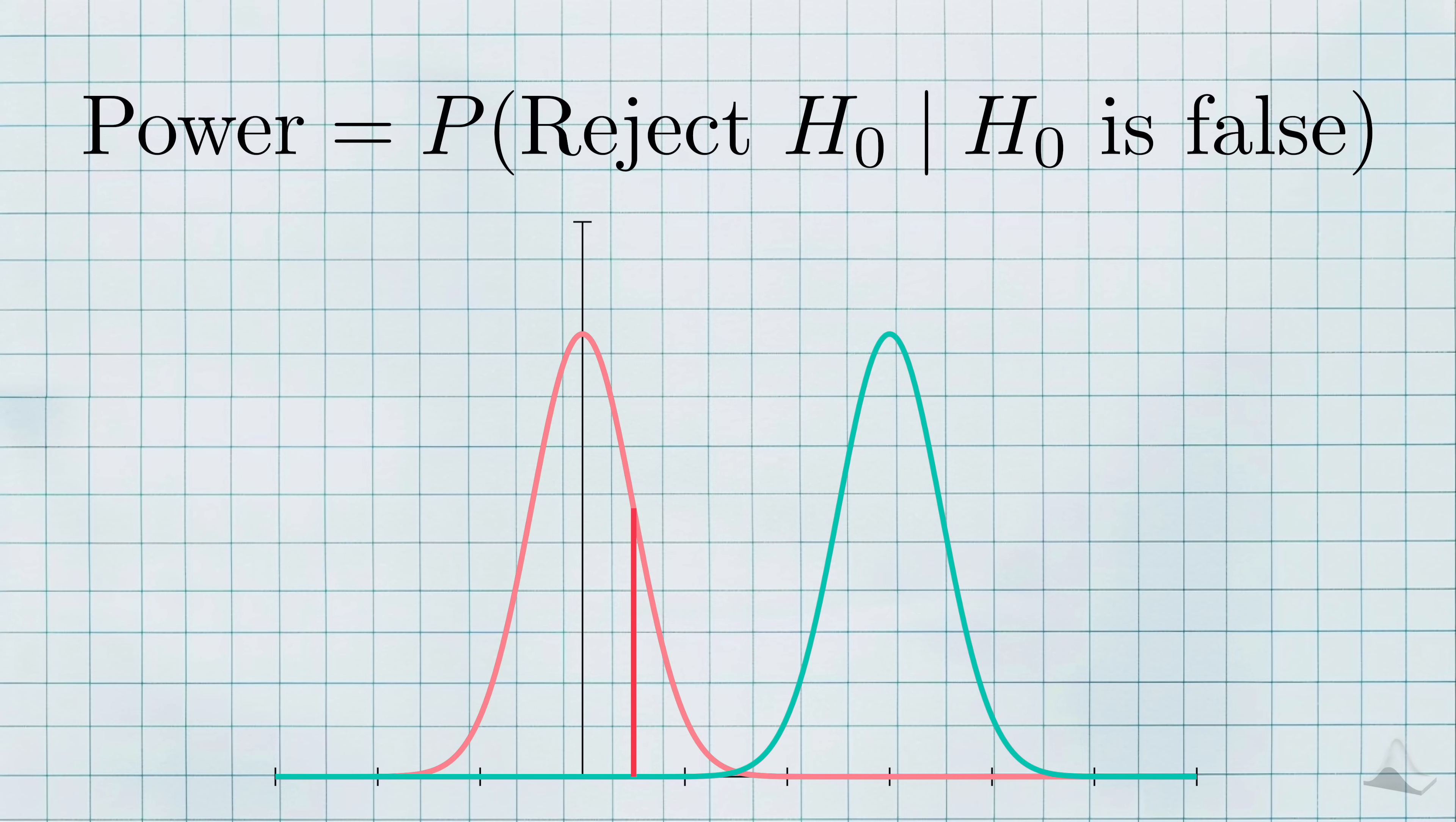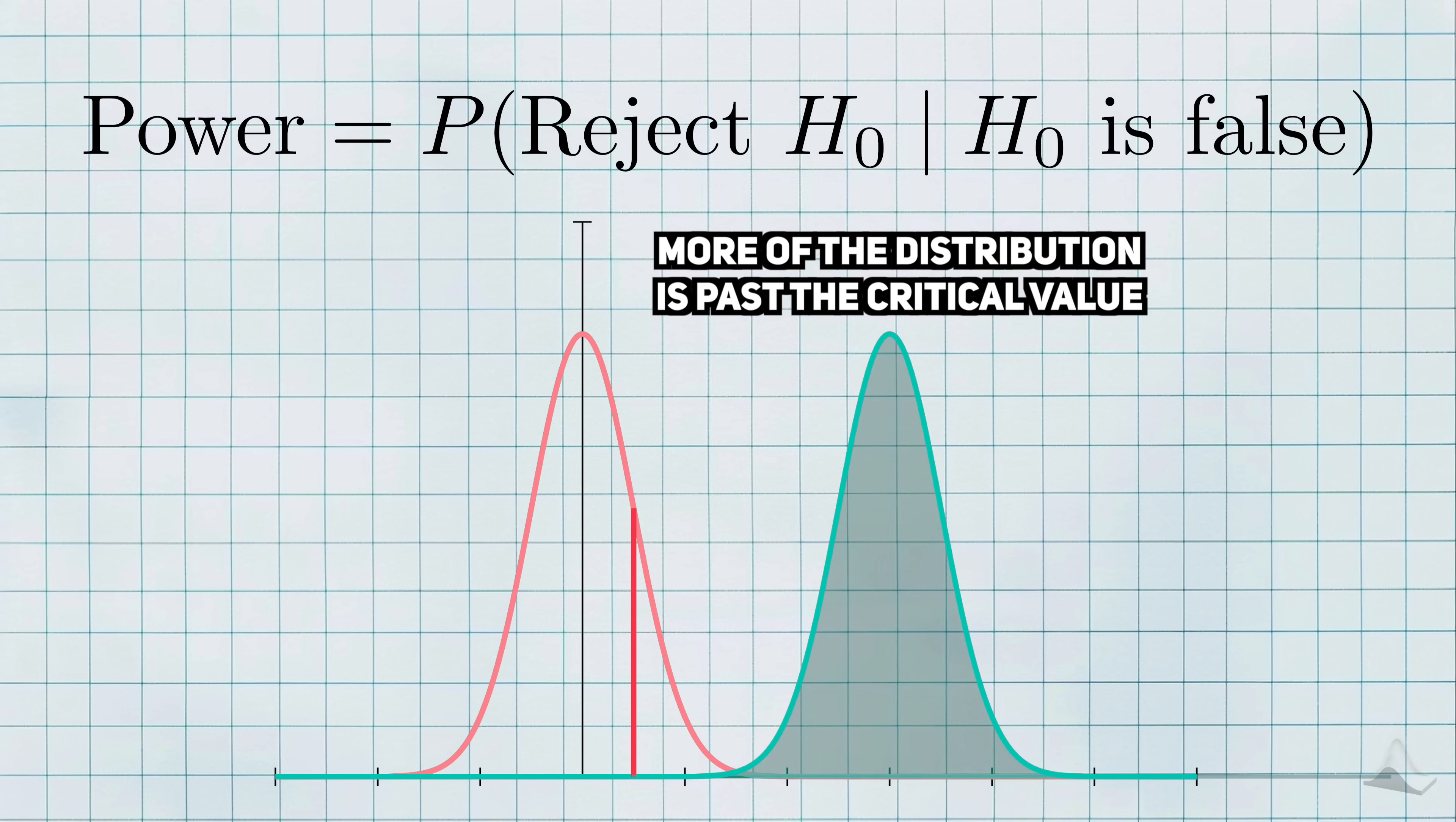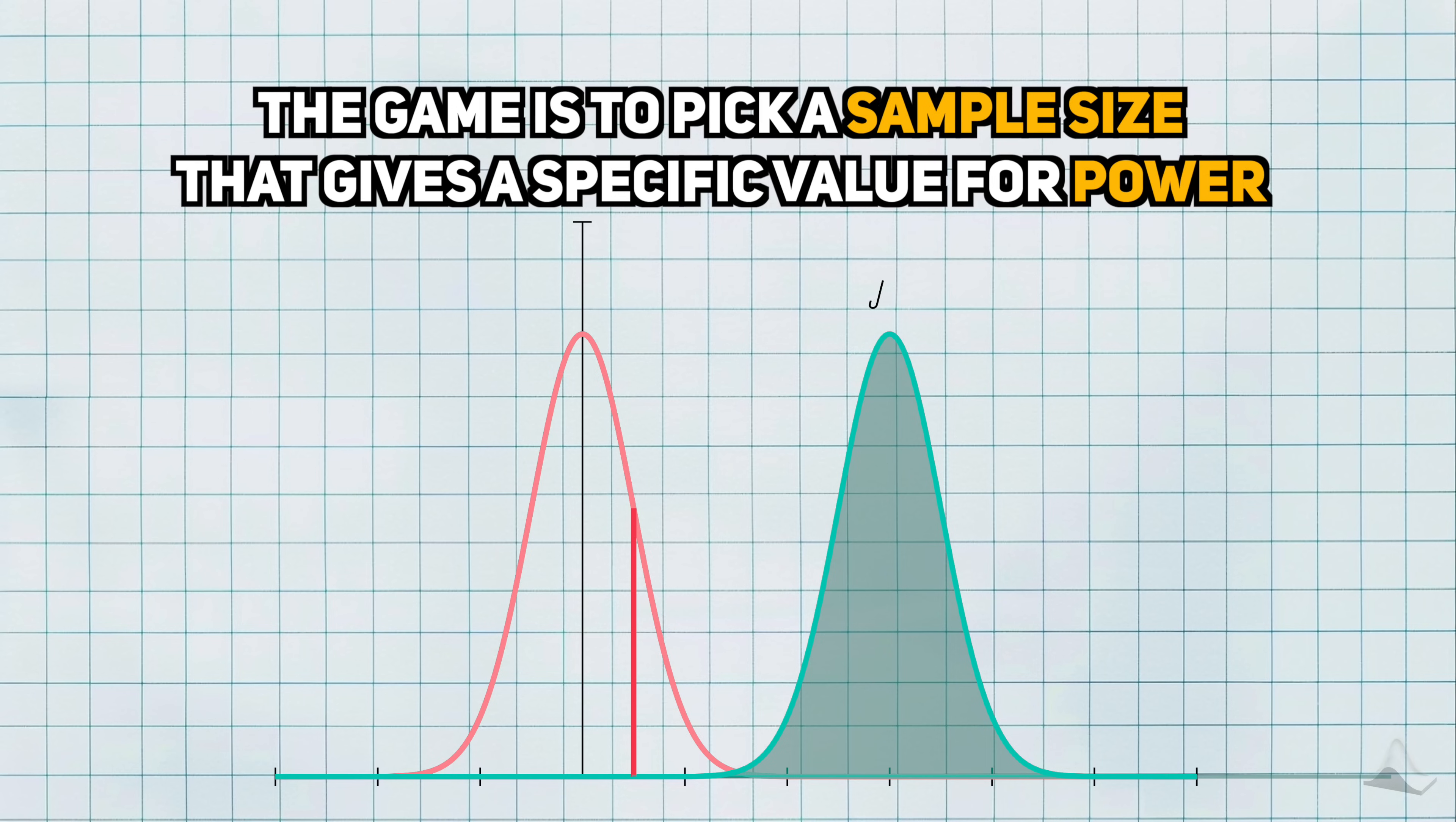This is because higher sample size shrinks the variance of the sampling distribution, but it still stays centered at the true mean. The end result is that more of the alternative distribution is past the critical value, so it's easier to observe a test statistic that will let us reject the null hypothesis. The probability that this will happen is given by this area here. That's power.